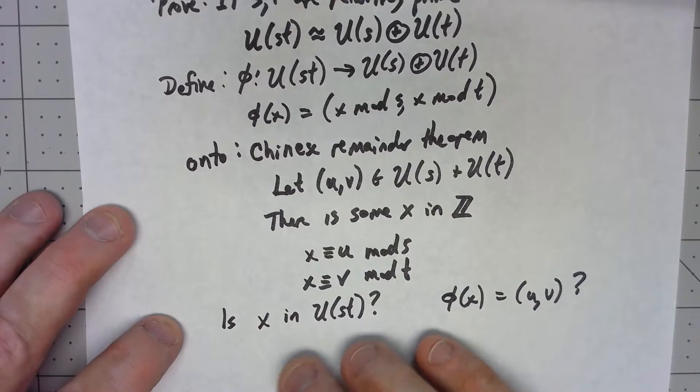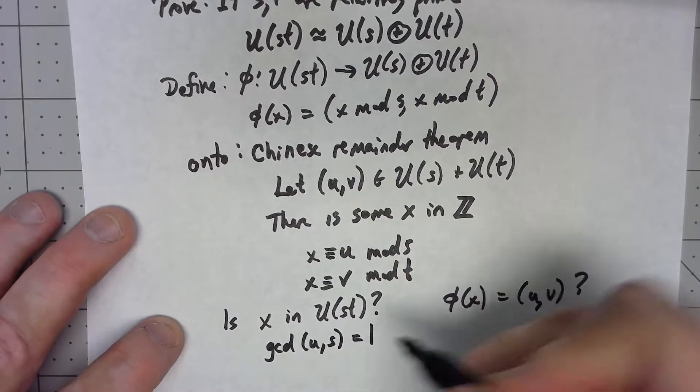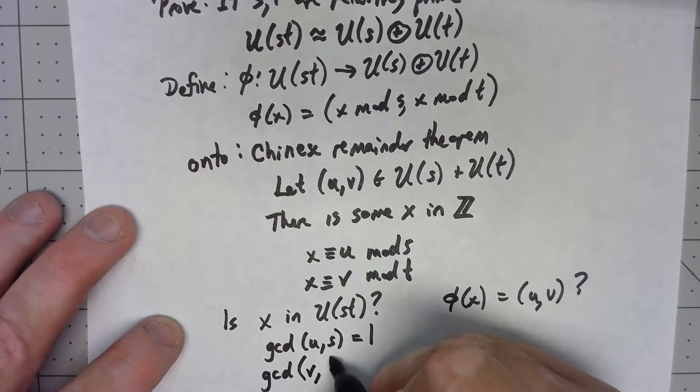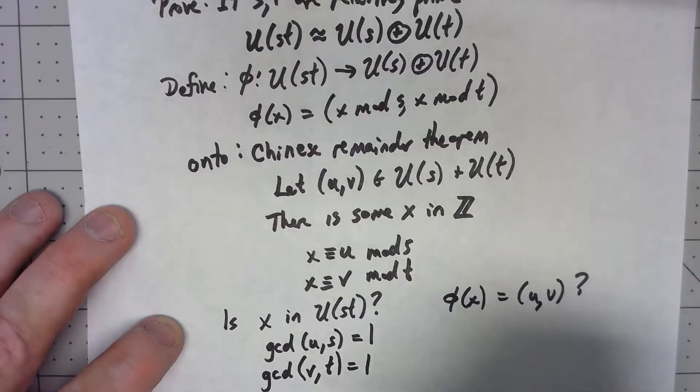So as I said before, the gcd of u and s has to be 1, and the gcd of v and t has to be 1.